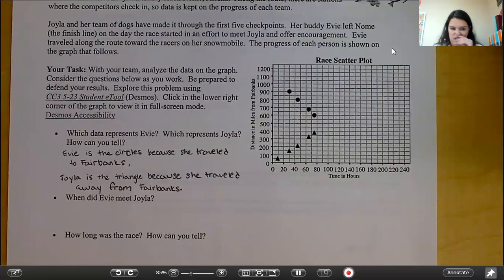So go ahead and pause the video and answer the next two bullet points. When did Evie meet Joyla and how long was the race? How can you tell?